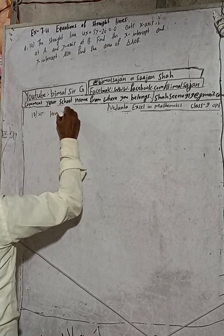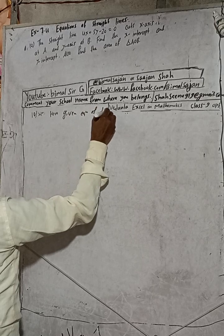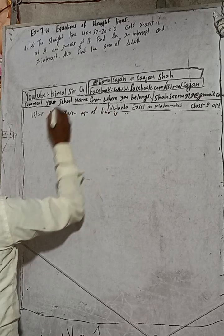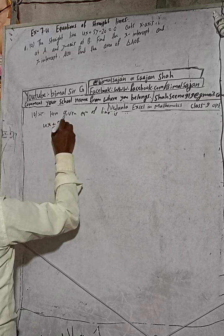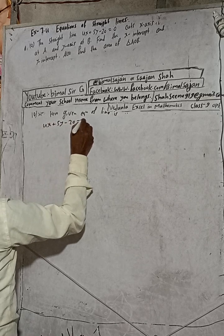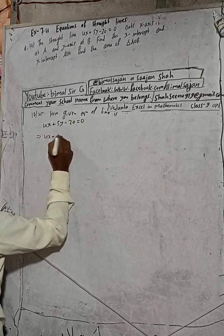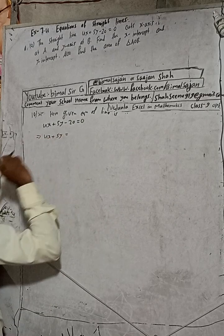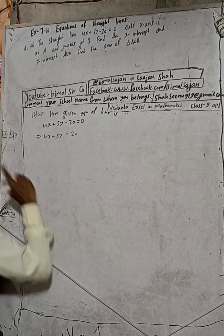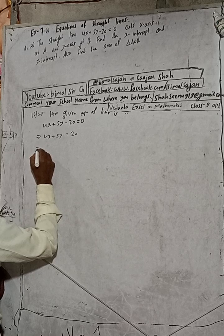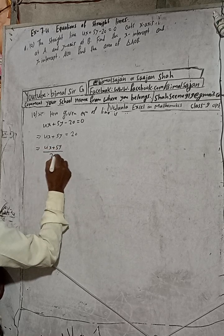Here, the straight line given, the equation of line is 4x plus 5y minus 20 is equal to 0. Now write this: 4x plus 5y is equal to, this is minus 20 in the left side when it goes to the right side is plus 20.